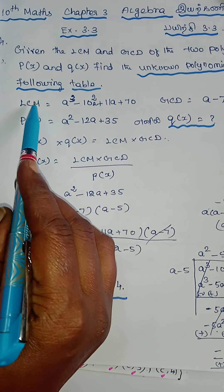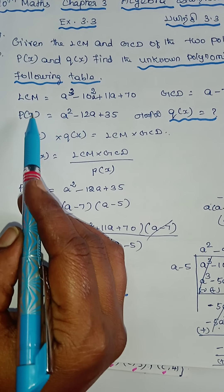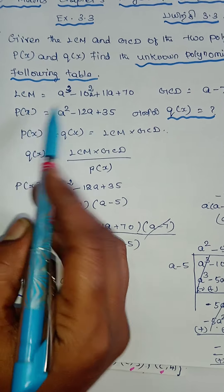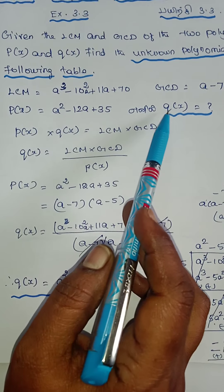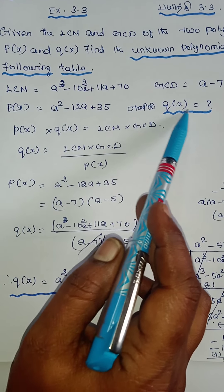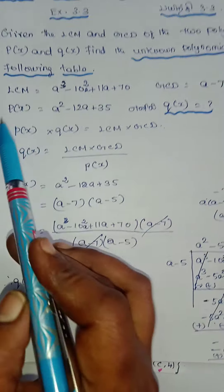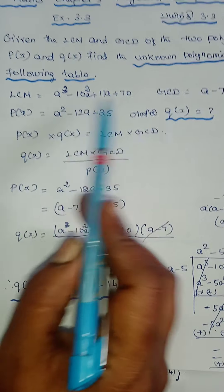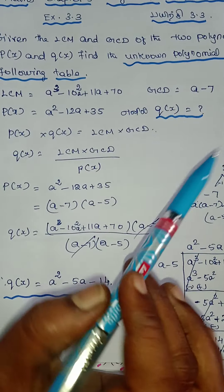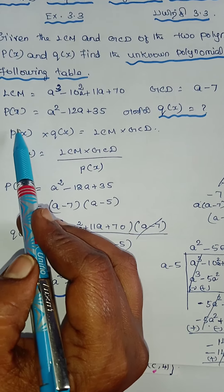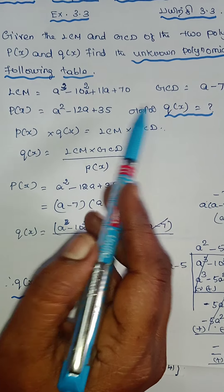Now let's take a look at LCM, P of X, and GCD. Now let's take a look at Q of X. This is P of X and Q of X. Now let's take a look at F of X and G of X.